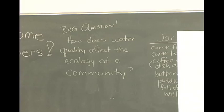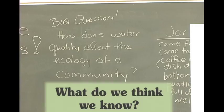What do you think you know? This is what we need to do first. At your table, I want you to write three things that you think you know as a group — three things you think you know about this question: how does water quality affect the ecology of a community? This is recorded in the first column. This activity elicits the students' prior understandings.